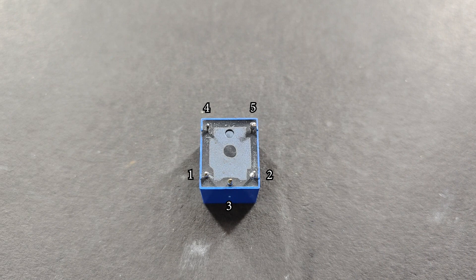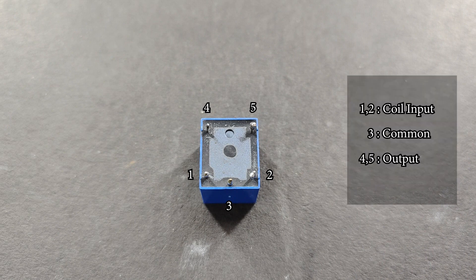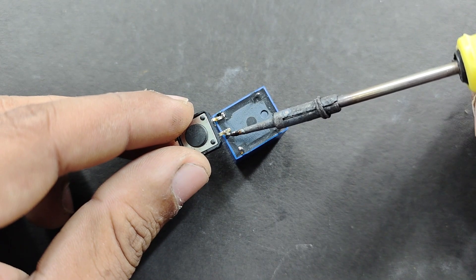To make it easier to understand, let's number the relay terminals 1 to 5 like you see in the video. Here 1 and 2 are the coil inputs, 3 is the common, and 4 and 5 are the output terminals. So first let us connect the push button switch between pin numbers 1 and 3.